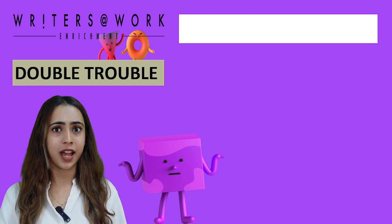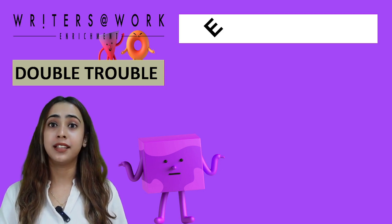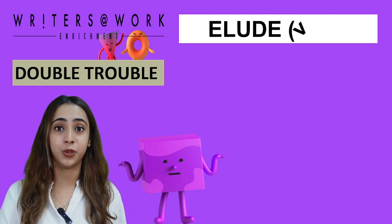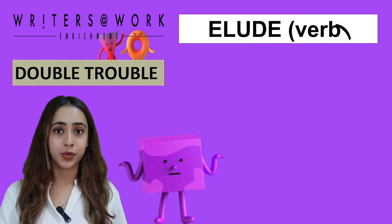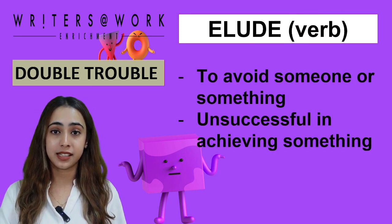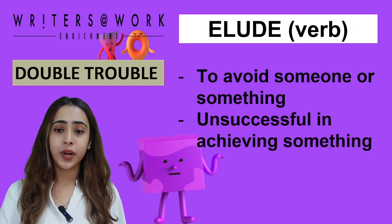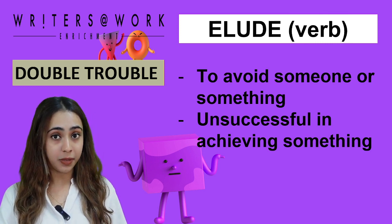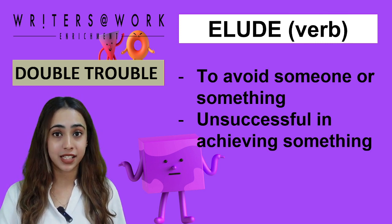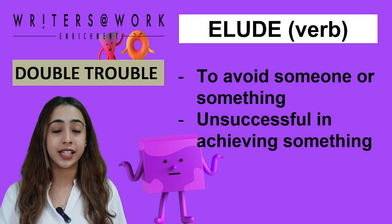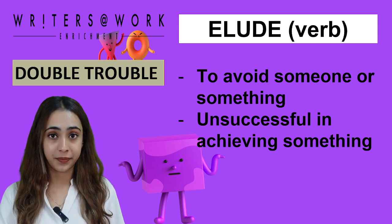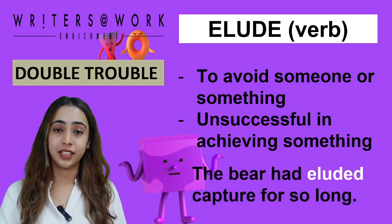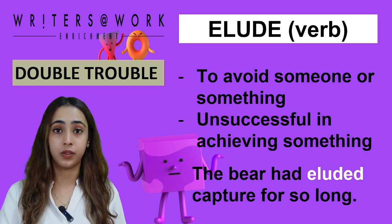On the other hand, we have the word illude, spelled as E-L-U-D-E, which is also a verb. It means to avoid someone or something. Another meaning is also being unsuccessful in achieving something. For example, the bear had illuded capture for so long.